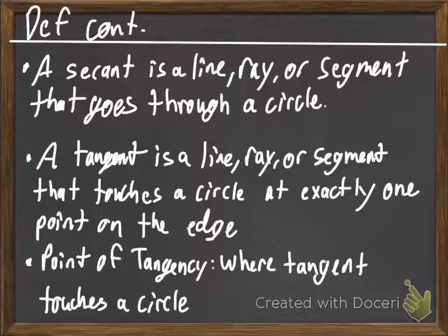A tangent is a line, ray, or segment that touches a circle at exactly one point on the edge. So, a tangent doesn't go through the circle at all. It touches one tiny point on the edge of that circle. And point of tangency, that's where the tangent line touches your circle.